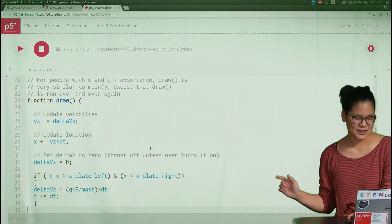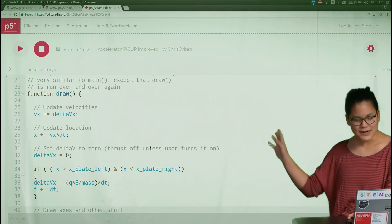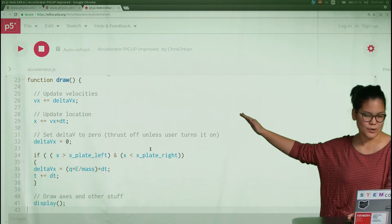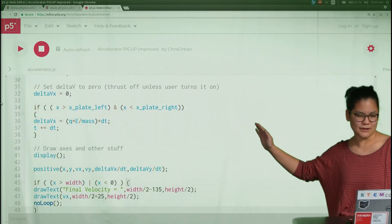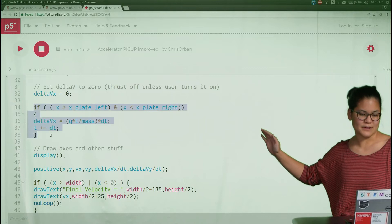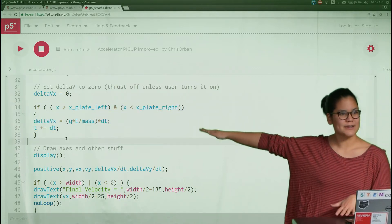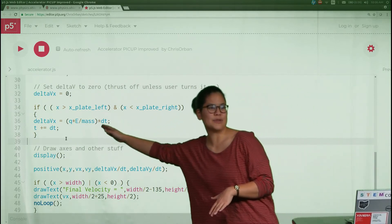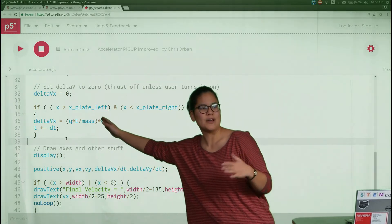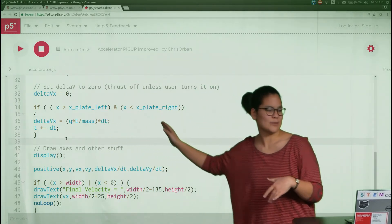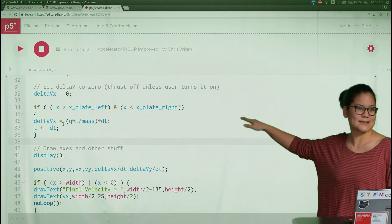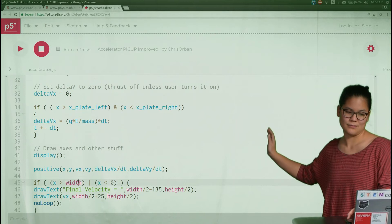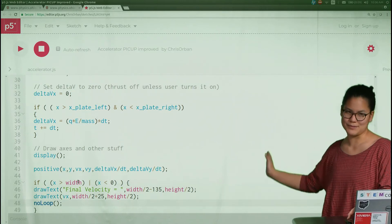As we're updating the velocity and the position of our particle, we can enter this clause where we have this non-zero delta vx when we're in between these two plates. So when the position is beyond the left plate and before the right plate we can have this acceleration and therefore this change in our velocity.